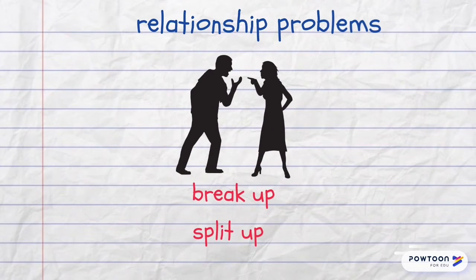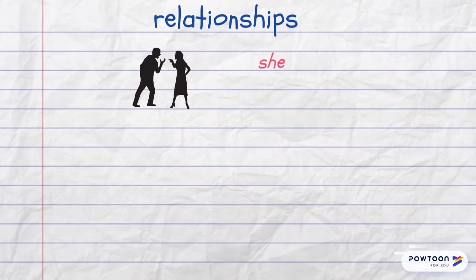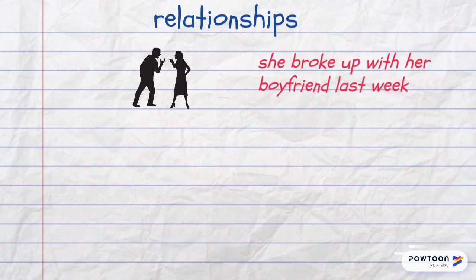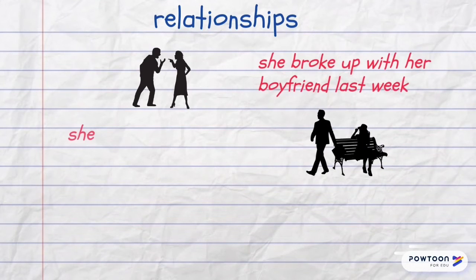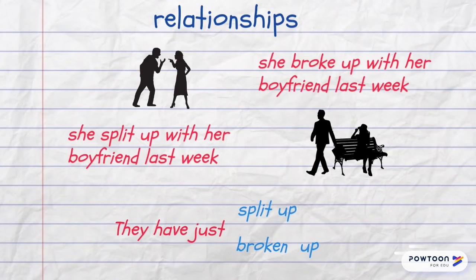When people decide not to be in a relationship anymore, they break up or split up with each other. When they separate, it means they are officially still married but not living together. The official end of the relationship is called divorce. For example: She broke up with her boyfriend last week. She split up with her boyfriend last week. They have just split up. They have just broken up.